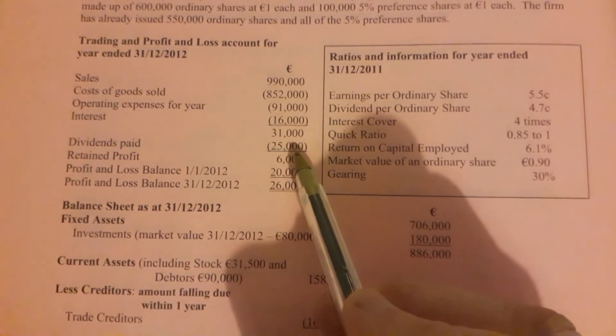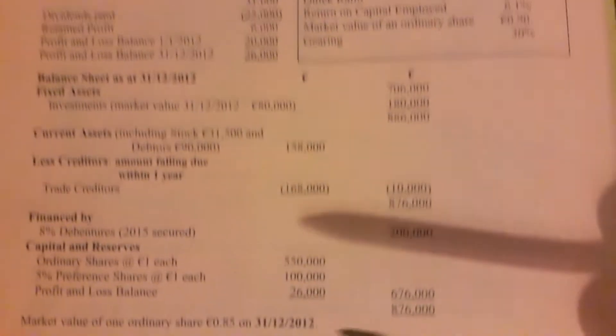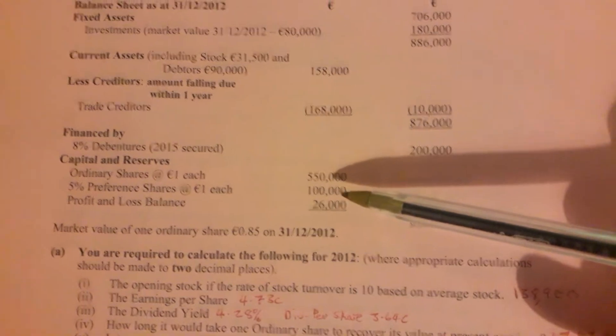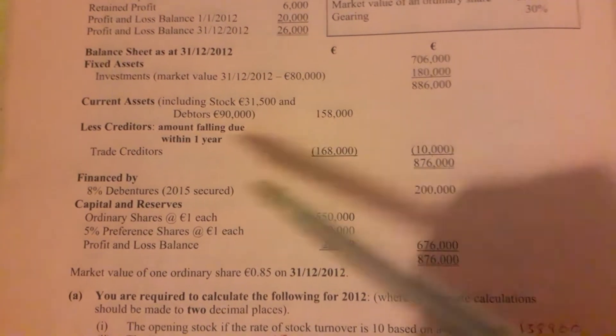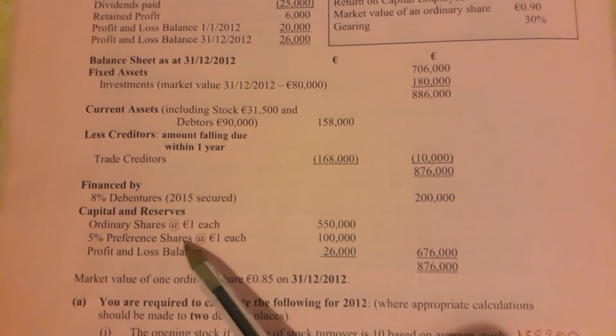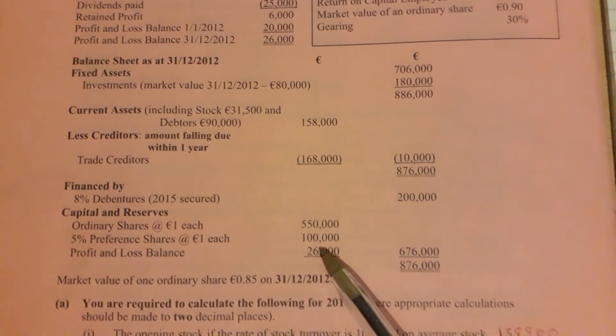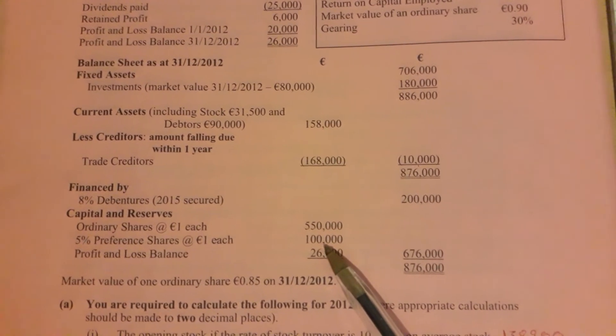So we don't know how much of that 25,000 is the amount for preference dividends. However, because preference dividends is a set amount that needs to be paid, we can work it out from looking at some of the figures in the balance sheet. We see that in the capital and reserve section we've got five percent preference shares at one euro each, one hundred thousand.